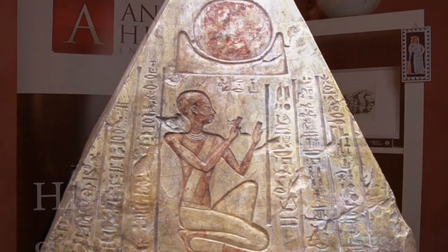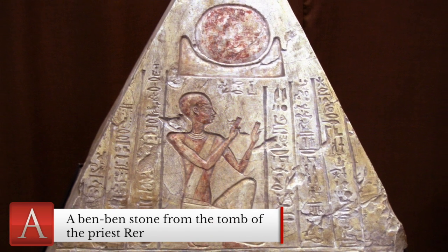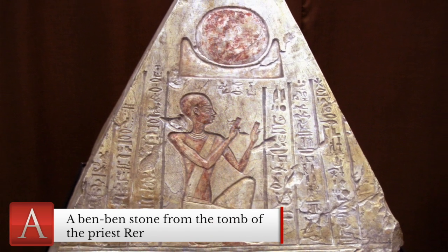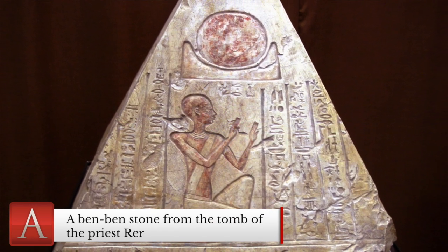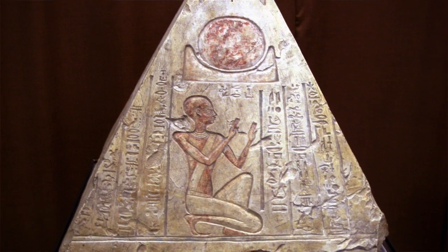Equally important is the symbol of the mound or hill known as the Benben, which represents the first small rise of land on which the god Atum stood amidst the swirling waters of chaos to create the world. The Benben is represented in Egyptian art as a triangle, and scholars have suggested that the shape of the pyramid comes from the Benben.